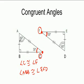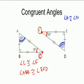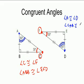Angle A has two arc marks with a 60-degree notation, and angle D also has two arc marks with a 60-degree notation. So we can say angle A is congruent to angle D, or angle CAB is congruent to angle FDE.